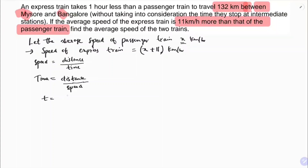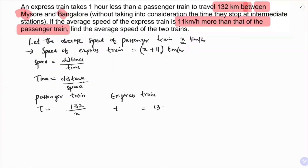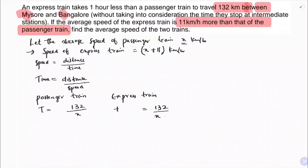For the passenger train, the time taken will be 132 divided by x kilometers per hour. For the express train, time equals 132 divided by (x plus 11). Since the express train travels 11 kilometers per hour faster, it takes one hour less. These are our two equations.